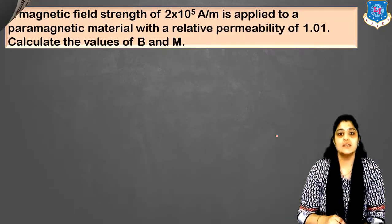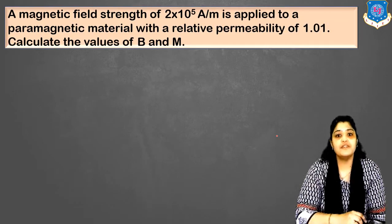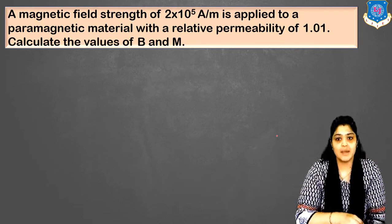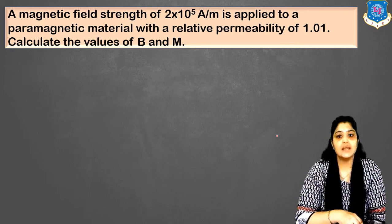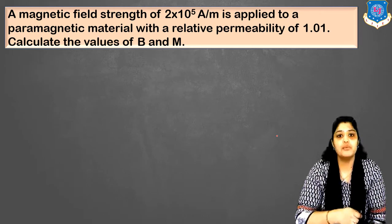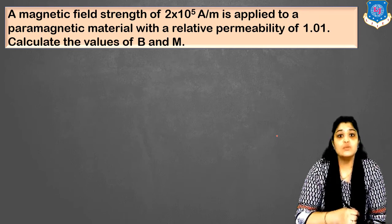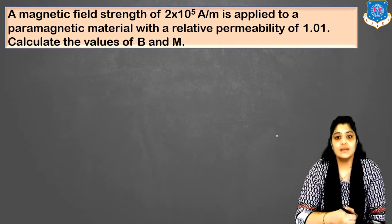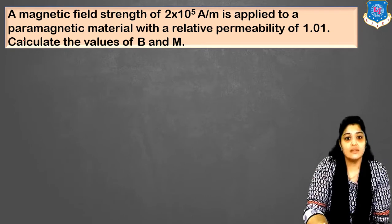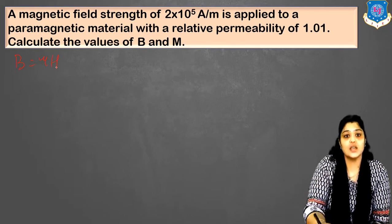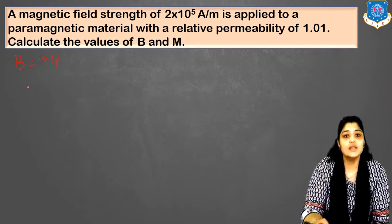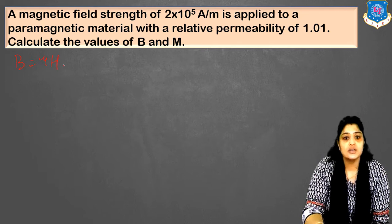Let's move on to the next numerical. A magnetic field strength of 2 into 10 raised to 5 ampere per meter is applied to a paramagnetic material with a relative permeability of 1.01. So mu_r and H are given. You have to find the values of B and M, that is flux density and magnetization.